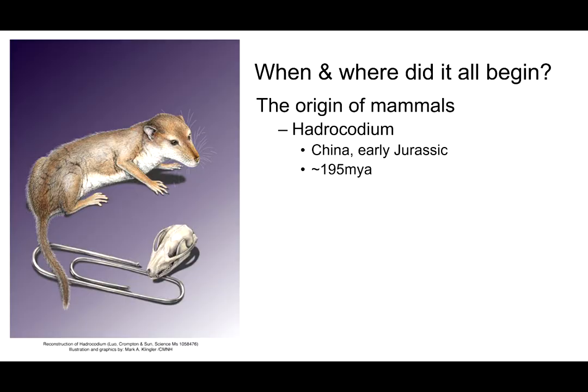Mammals appear in the fossil record even earlier than the multi-tuberculates. The oldest known mammal is from early Jurassic sediments in what is today China — sediments deposited about 195 million years ago. The scientists who found and described these fossils named them Hadrocodium. They were tiny; a reconstruction of the animal shows its body is not much longer than a paperclip. These little mammals are generally considered to be more like proto-mammals, and it is thought that they survived in the cold and dark of night.